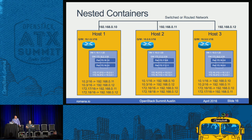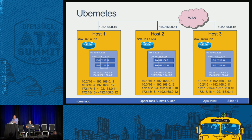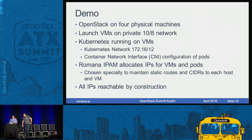Everything described here about IP addresses, hosts, and reachability works across the WAN as well. There's a Kubernetes project called Ubernetes that allows Kubernetes to schedule pods and resources across separate data centers. Everything works identically in an environment where Kubernetes runs across data centers. We were hoping to demo two OpenStack clusters with Kubernetes scheduling across them — that would have worked without any changes — but time didn't allow. With that, I'll pass it over to Robert.